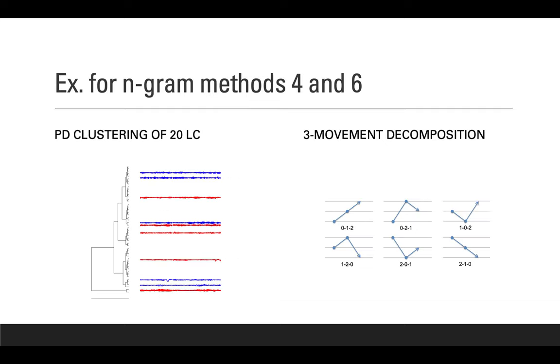Here are some examples of the methods we used behind creating these n-grams, methods particularly for methods four and six, based on frequently used methods of decomposing time series. On the left, there is the probabilistic distance clustering, or PD-clustering, and on the right, there is the three-consecutive movements, both of them having been previously published in the literature.